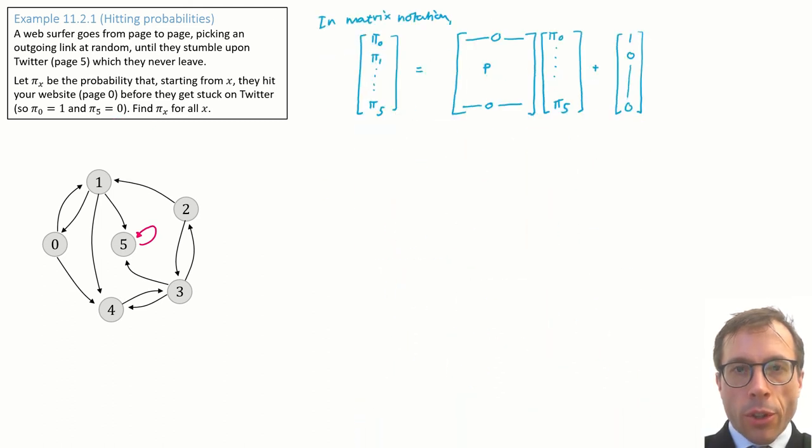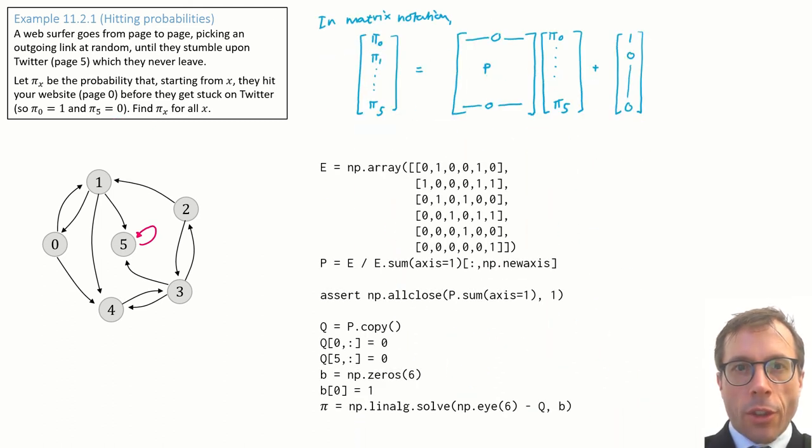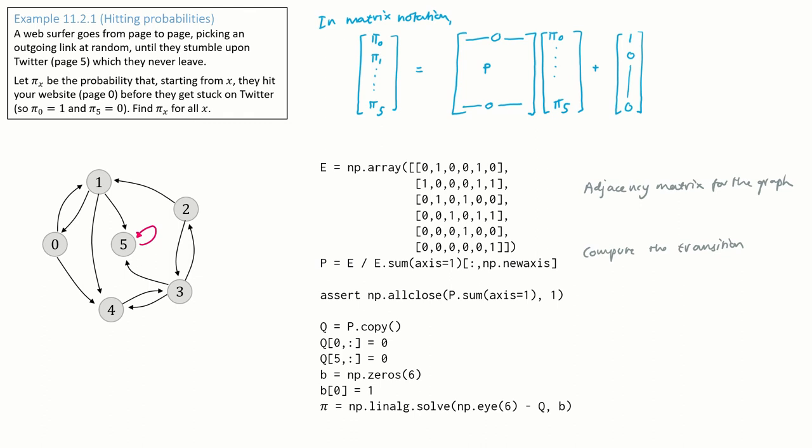Anyway, the point of this matrix form is that it's easier to program that way. Here's the code. First, I get the transition matrix p. I type in the adjacency matrix for the graph, and I use that to get the transition probabilities for my random walk.